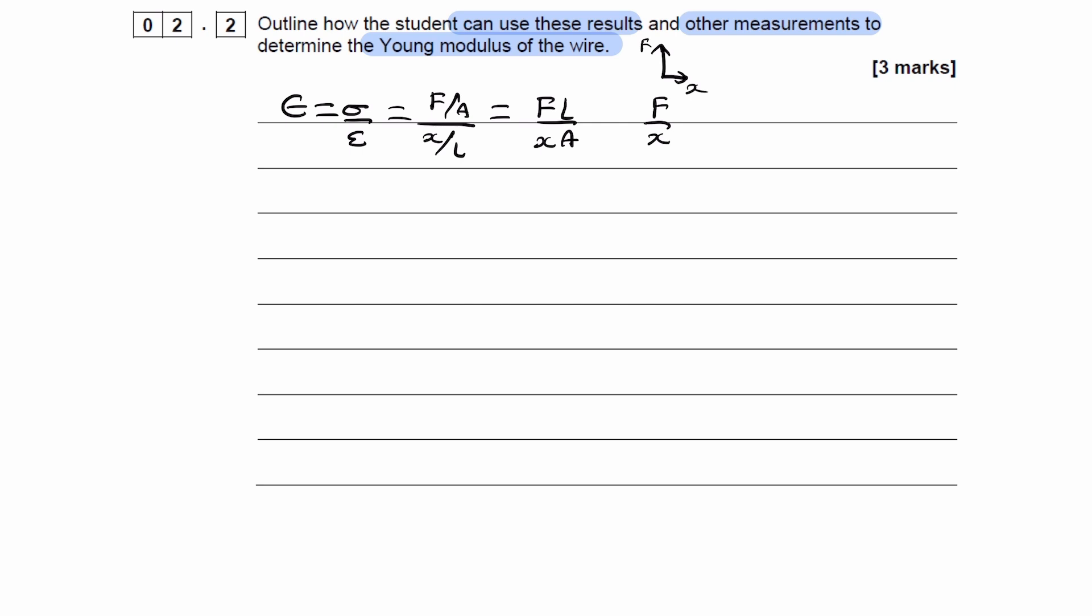We then need to get the length and the cross-sectional area. We can directly measure the length. The cross-sectional area, we need to first measure the diameter, divide that diameter by 2 to get the radius, and then we do pi R squared to get the area.